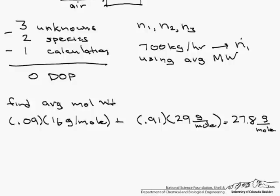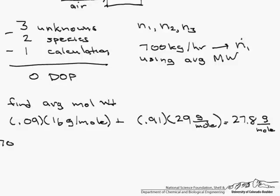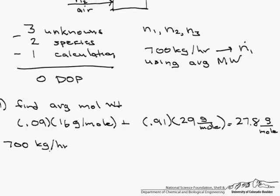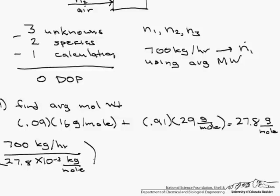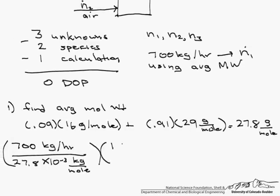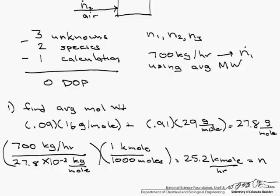And so we come up with an average molecular weight of 27.8 grams per mole. And that makes sense. You know that it's going to be closer to the molecular weight of air because it's 91% air. So now we take our 700 kilograms per hour. We divide it by 27.8 times 10 to the minus 3 kilograms per mole. And let's work with kilomoles rather than moles, otherwise we are going to have these really large numbers. So 1 kilomoles has 1,000 moles. And so we come out with 25.2 kilomoles per hour, which is our N1.